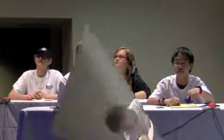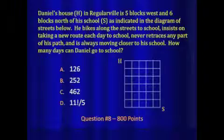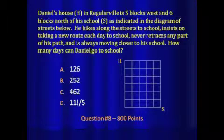You have 2,800 now. Here we go. Daniel's house, which is H in this diagram, in Regularville, is five blocks west and six blocks north of his school, which is labeled S.